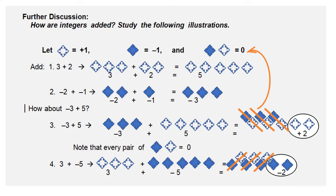For further discussion, how are integers added? I want you to study the following illustration. First, we will let the white tiles represent the positive one, and the colored tiles represent the negative one. And also, I want you to consider this zero pair.